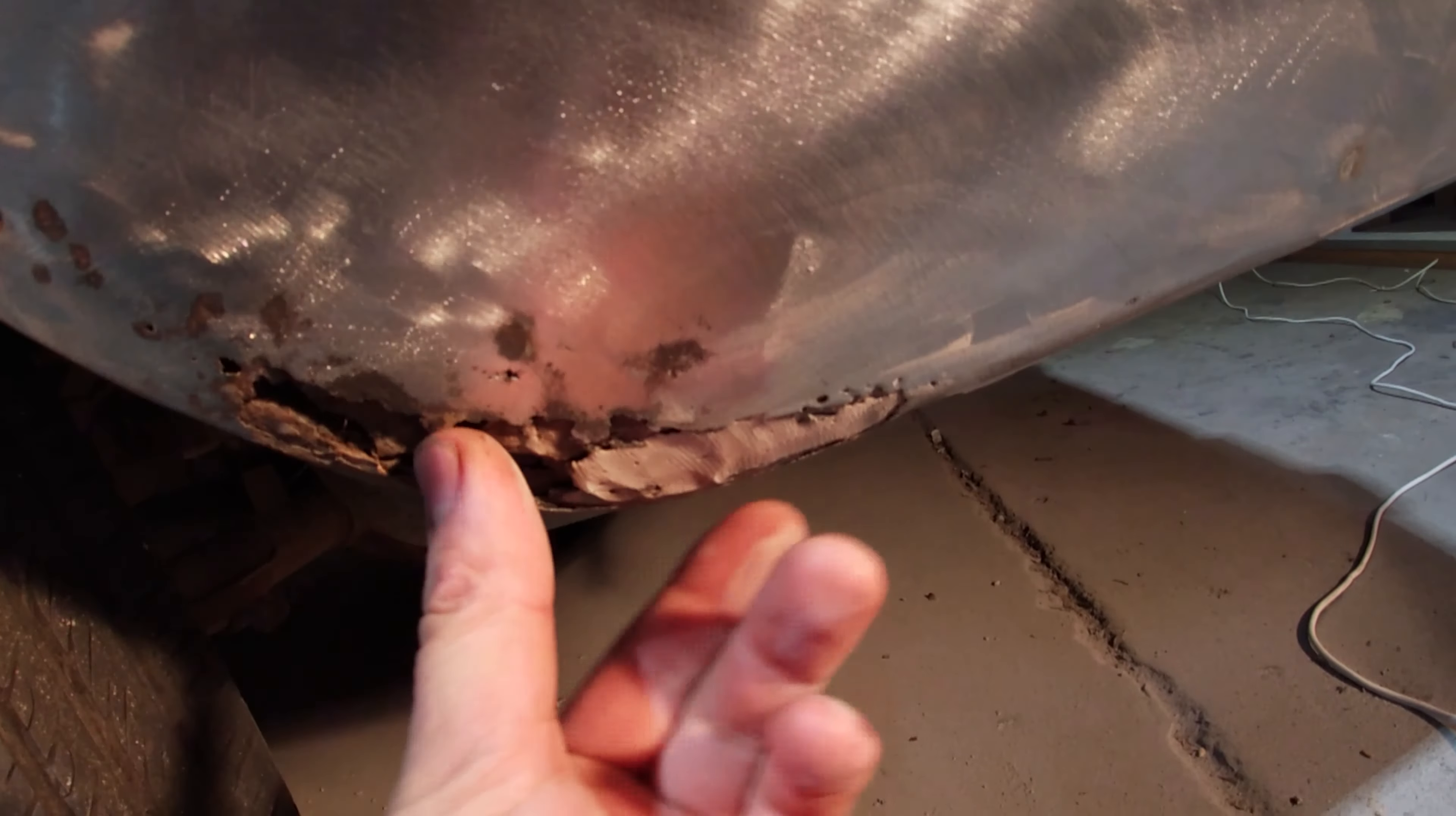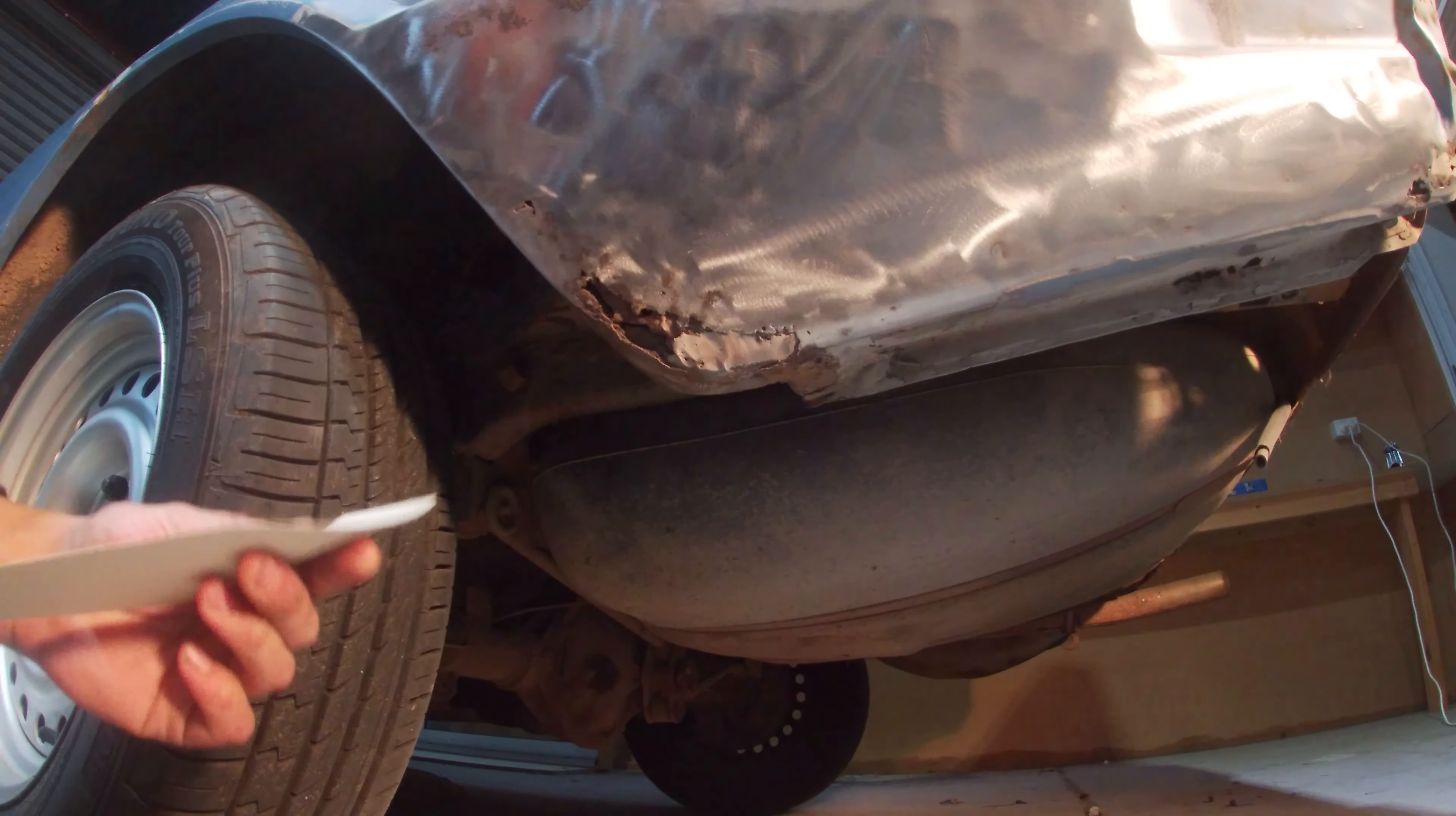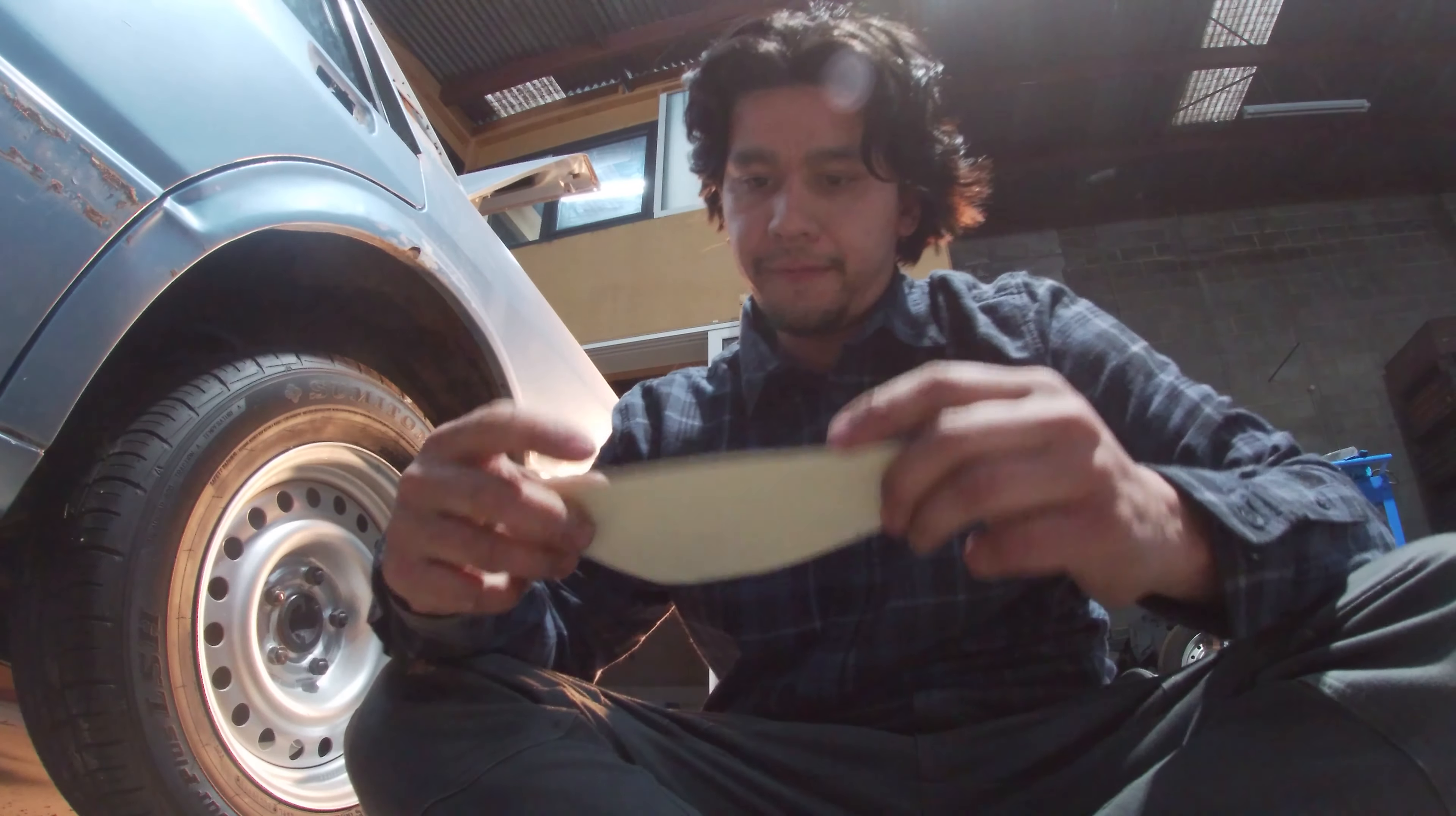Of our piece that we need to replace, then we're going to transfer that to some steel. Alright here's my little template here. We'll tune this down a little bit more, this is a pretty good starting point so let's scribe this on to our sheet of metal.